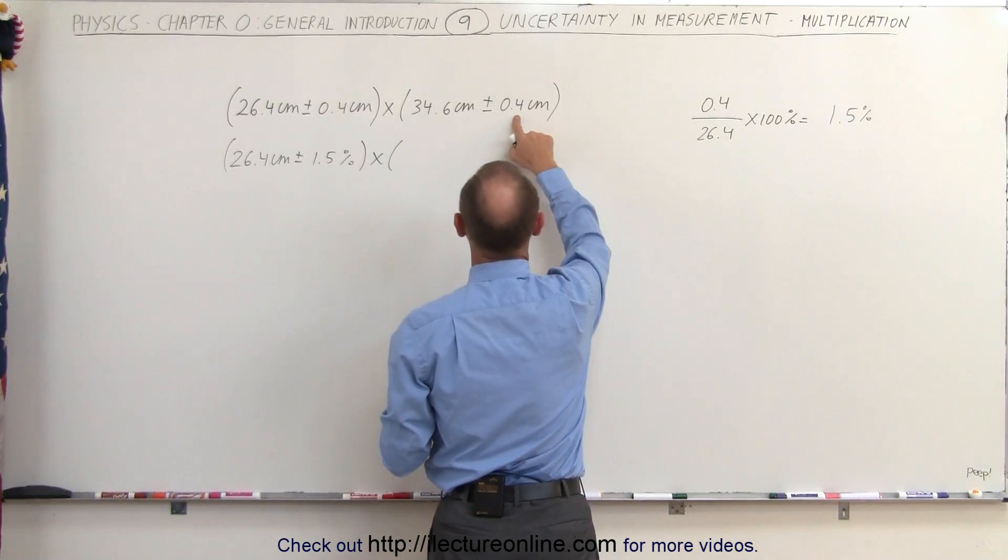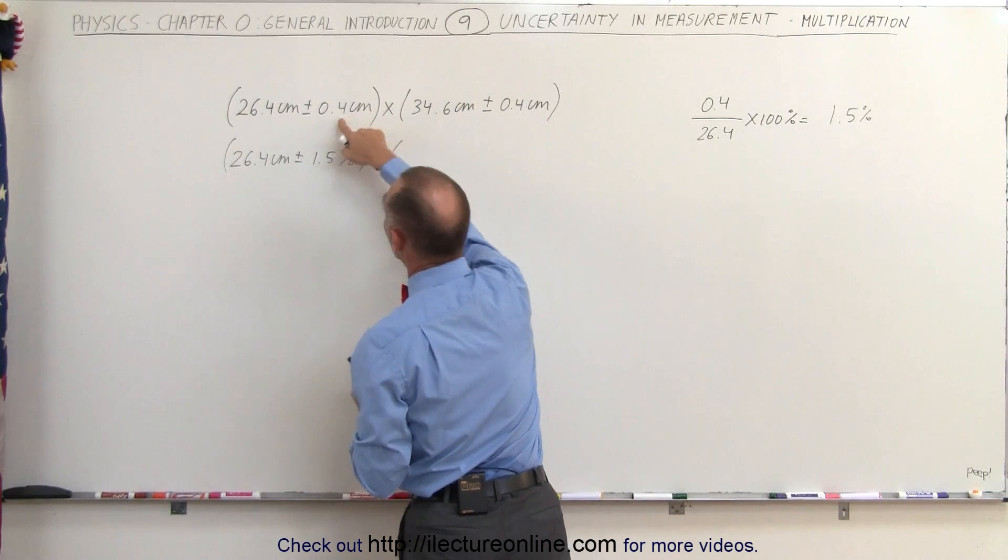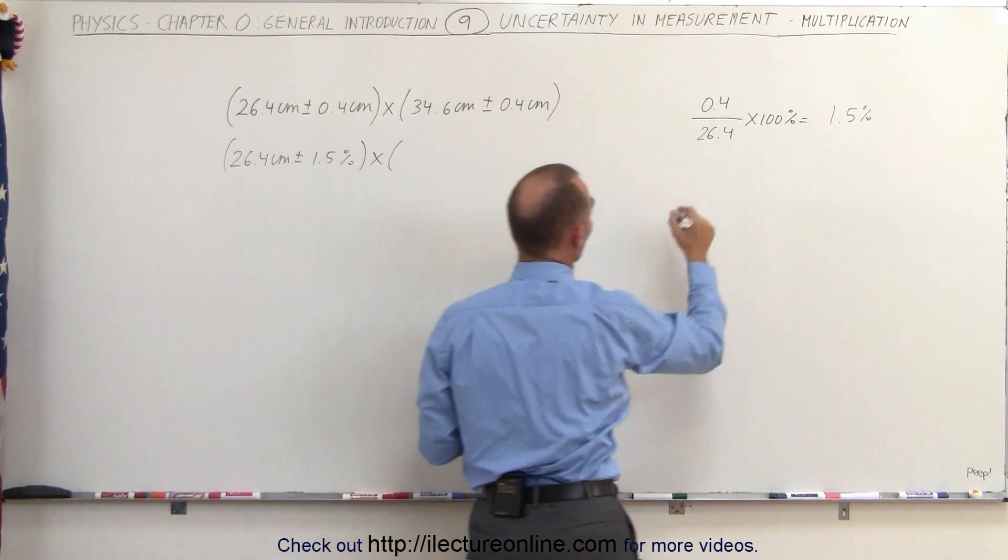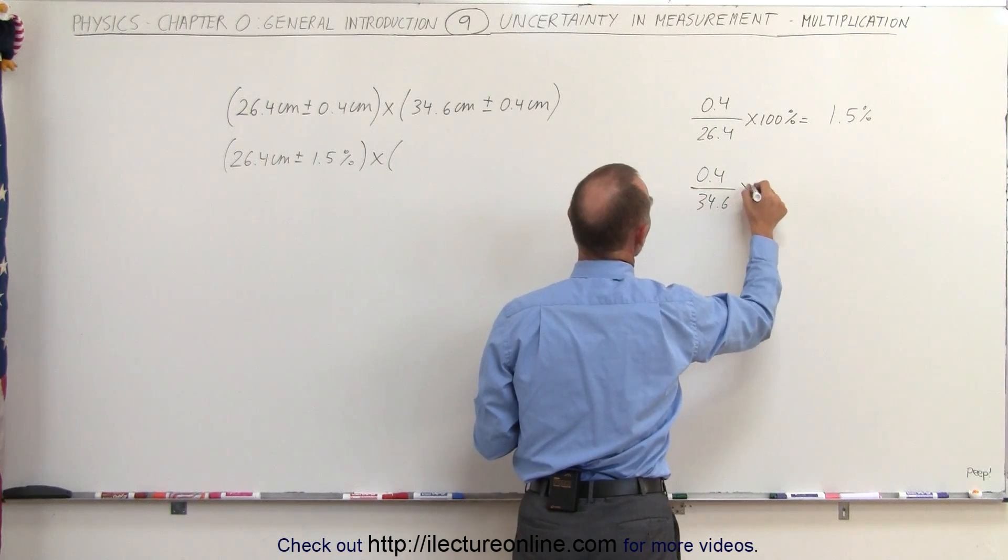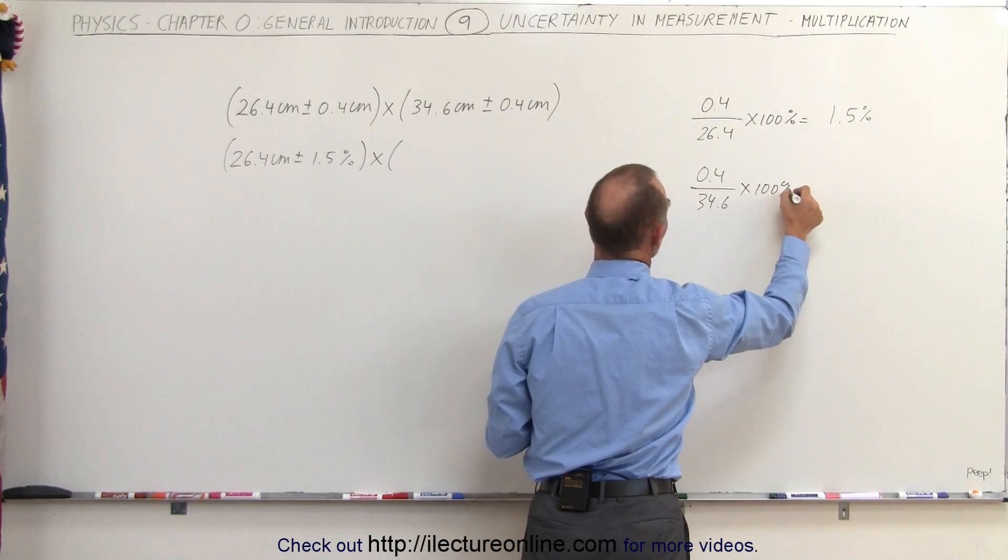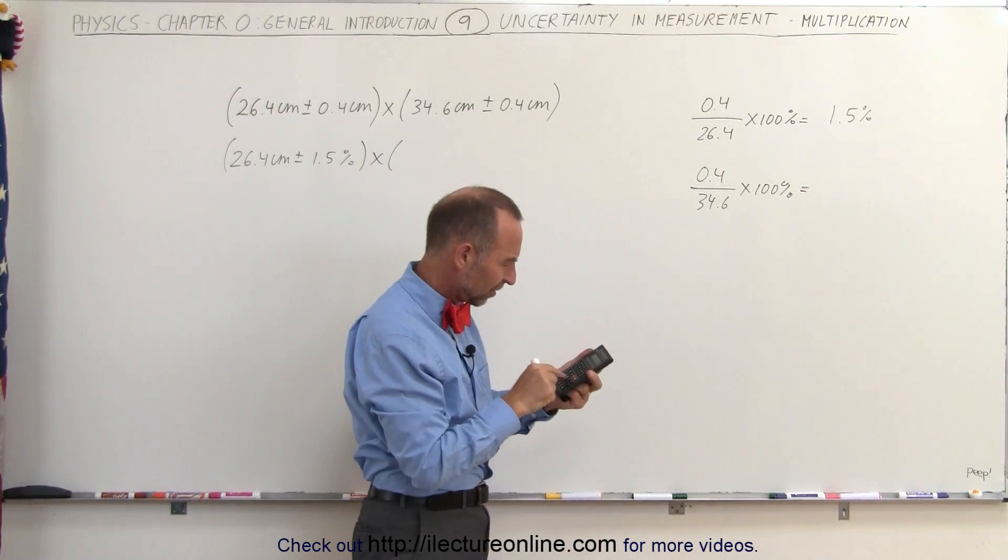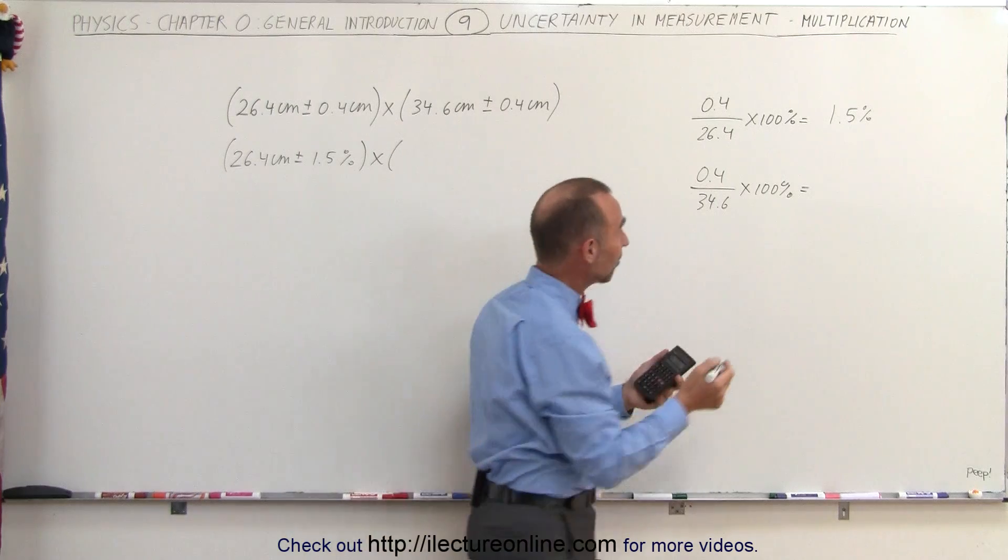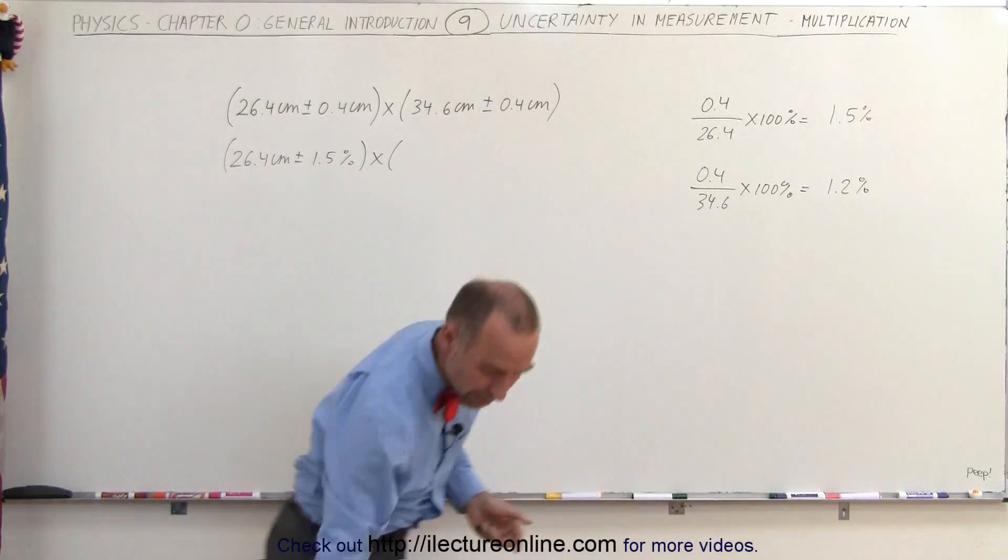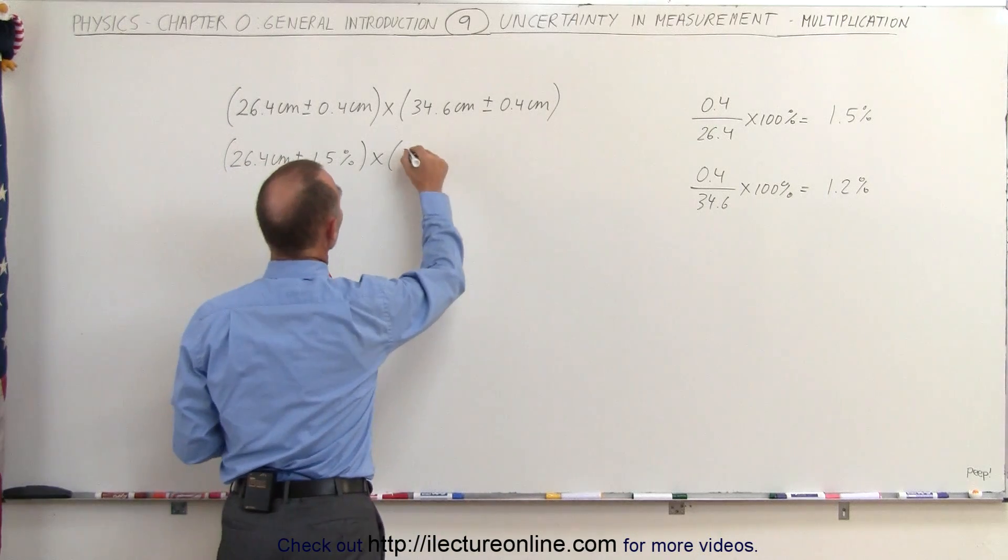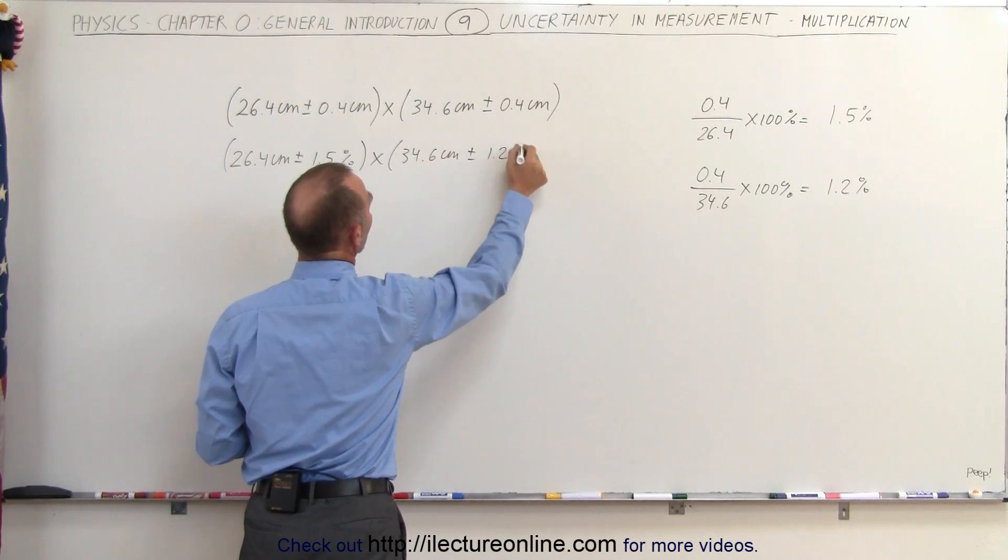Notice that 0.4 relative to 34.6 is going to be a smaller percent than 0.4 relative to 26.4. So we get 0.4 divided by 34.6 times 100 percent. Let's see what that is: 0.4 divided by 34.6, rounded off, would be 1.2 percent. Then of course we have 34.6 centimeters plus or minus 1.2 percent.